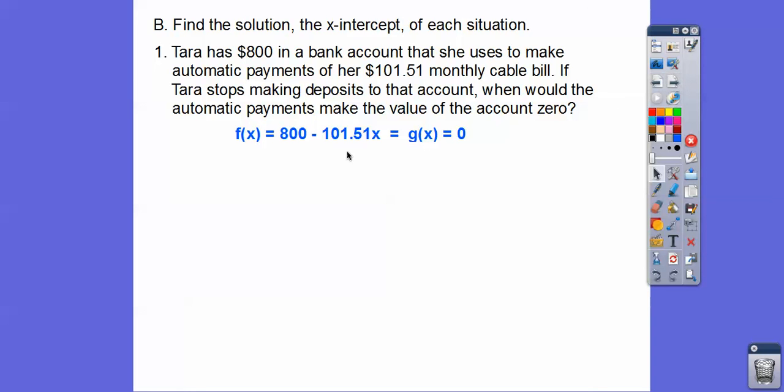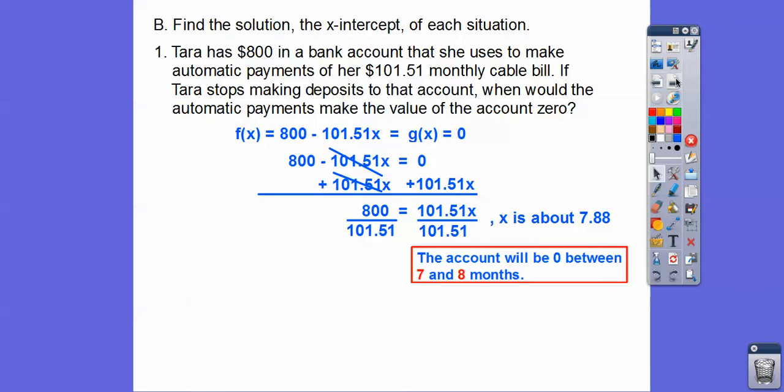Okay, so just set those two equations equal to each other. When will this function, remember it takes off the cable bill every month, so she doesn't have any more money in there and it just keeps docking, docking, docking. When is it going to equal 0? So we just set it equal to 0. I don't like that negative x, so I just put it over there on that side, made it positive x. So we have 800 equals 101.51x. Then we divide 800 by 101.51 and we get about 7.88.